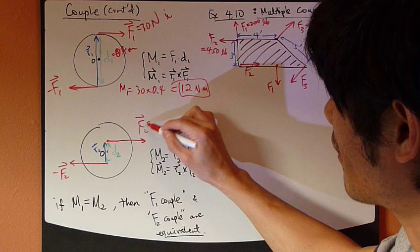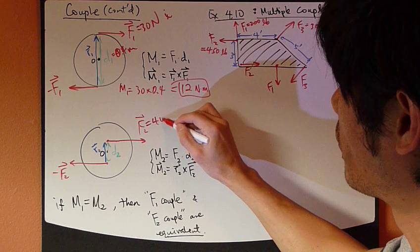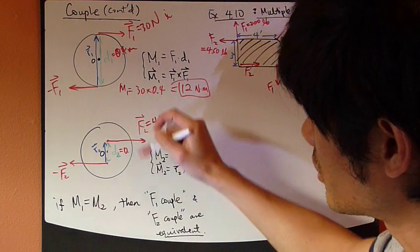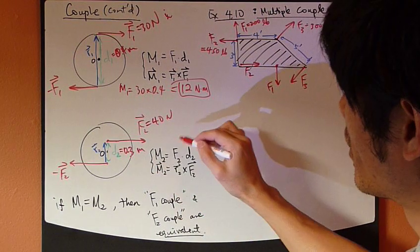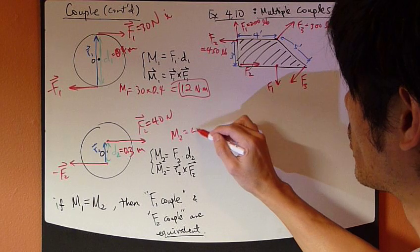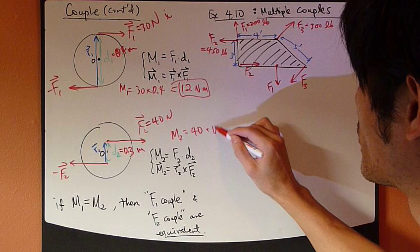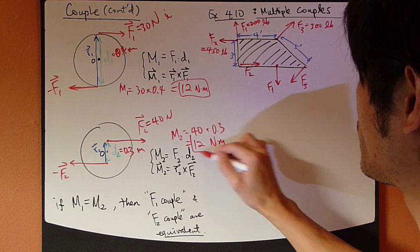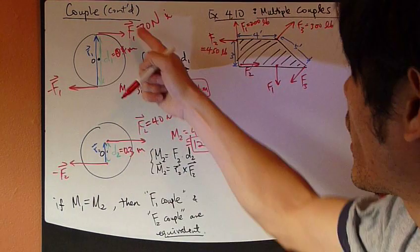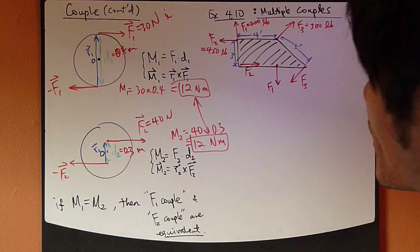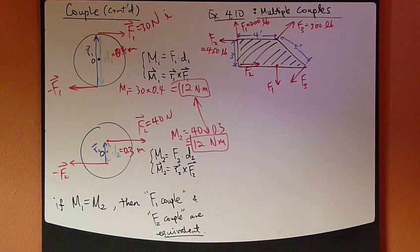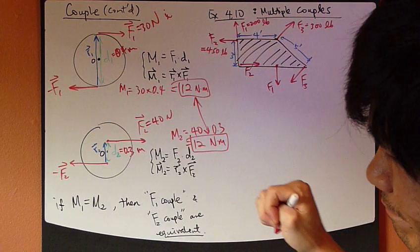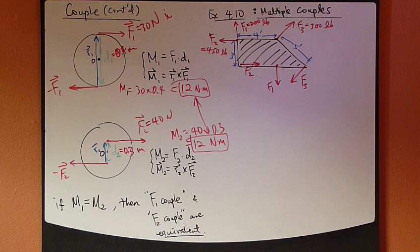Second case, F2, let's say, it's 40 newtons now. Same thing here. But D2, they look closer to each other, so D2 is 0.3 meters. So, M2 equals 40 newtons times 0.3, also 12 newton-meters. So, these two cases create the same moment. So, we say that these two couples are equivalent.